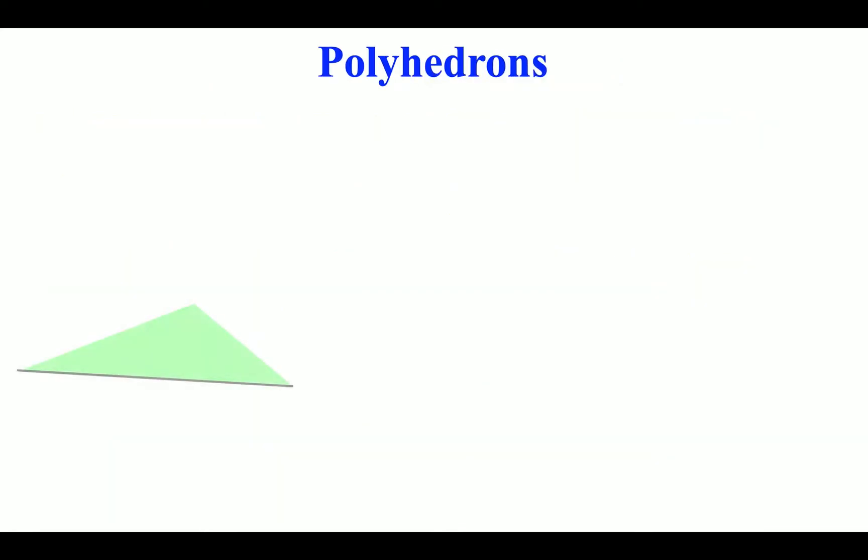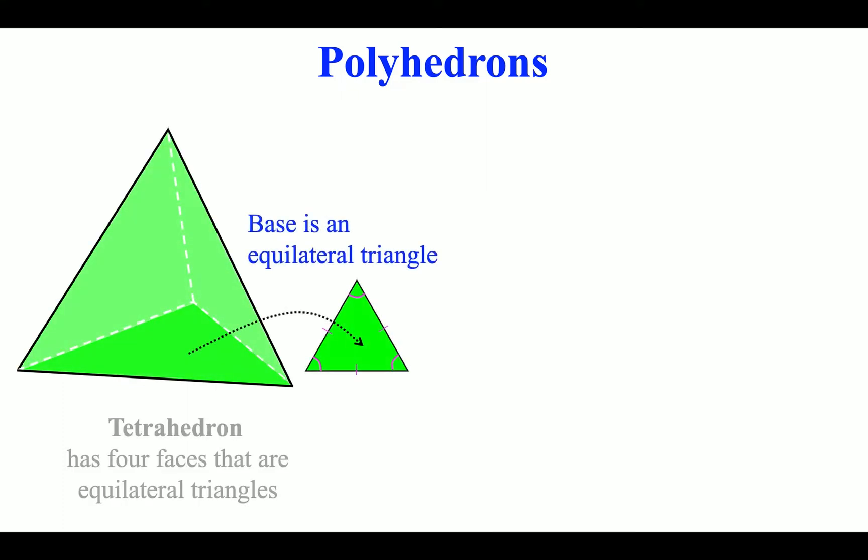Polyhedrons. Tetrahedron has four faces that are equilateral triangles.